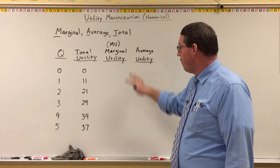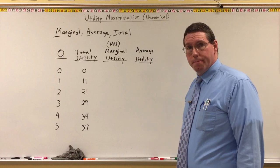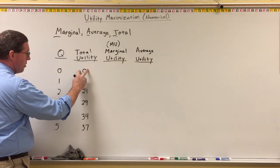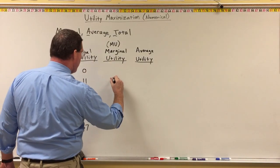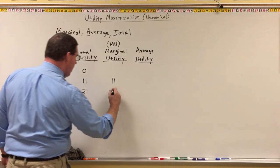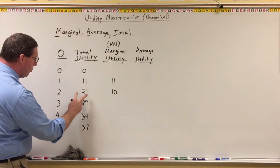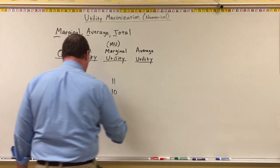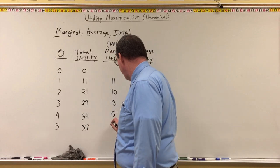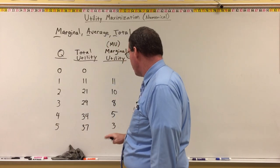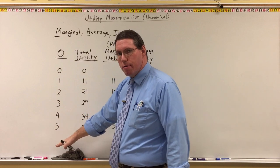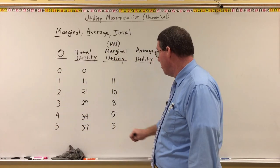For the first unit, utility went from zero up to 11, so marginal utility is 11. The second unit brings total utility up to 21 from 11, so 21 minus 11 equals 10. The third unit brings utility to 29 from 21: 29 minus 21 equals 8. The fourth: 34 minus 29 equals 5. And for the fifth: 37 minus 34 equals 3. So the marginal utility of the fifth unit is 3. As quantity increases, marginal utility is diminishing — diminishing marginal utility.